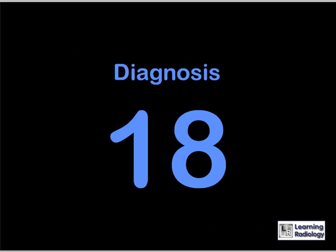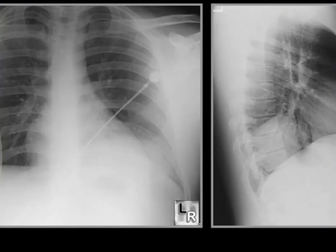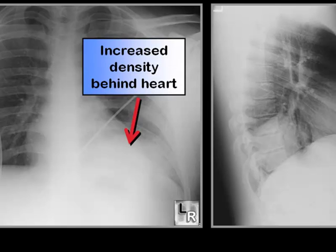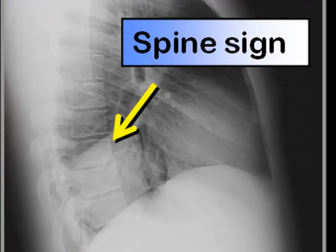Why does this 23-year-old have a cough? There is increased density at the left lung base, obscuring the left hemidiaphragm. On the lateral view, there is the spine sign, in which there is increased density at the lower aspect of the thoracic spine. Normally on a lateral chest image the spine appears to become blacker toward the hemidiaphragm, but here the spine appears whiter.